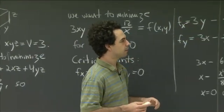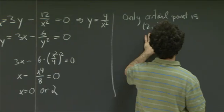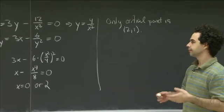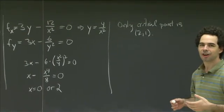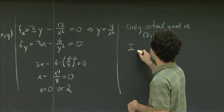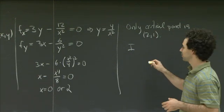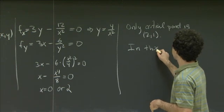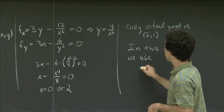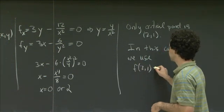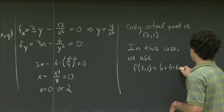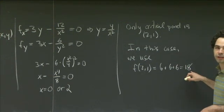Since the only critical point is (2, 1), that point must be the global minimum. Out of curiosity, how much cardboard is that? f(2, 1) = 3(2)(1) + 6/1 + 12/2 = 6 + 6 + 6 = 18 square units of cardboard.